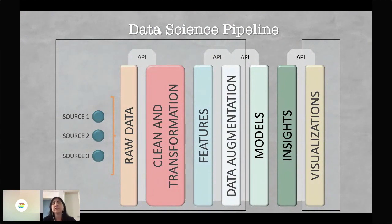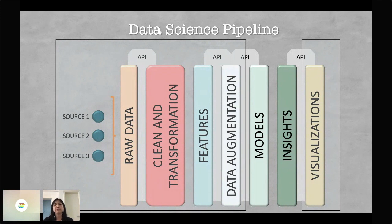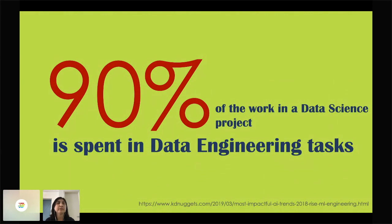The fun part is doing the models and insights — the machine learning and artificial intelligence part, or it can be done with just statistics. Although when you think about a data science project you usually think you're going to do only this part, the other part — the data engineering part — is actually the biggest work. In fact, we believe that 90% of the work in a data science project is spent on data engineering tasks.